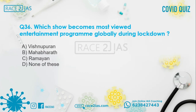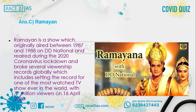Question number 36: Which show became the most-viewed entertainment program globally during lockdown? Option A: Vishnu Puran. Option B: Maha Bharat. Option C: Ramayana. Option D: None of these. The right answer is Option C, Ramayana. Ramayana originally aired between 1987 and 1988 on DD National, and was re-aired during the 2020 coronavirus lockdown. It broke several viewership records globally, setting the record for one of the most-watched TV shows ever with 77 million viewers on 16th April.